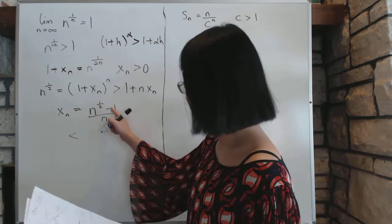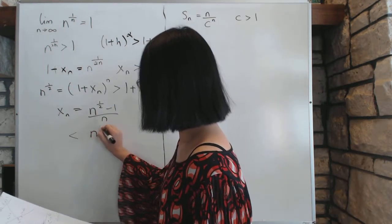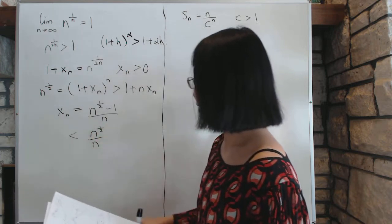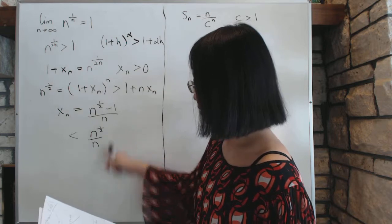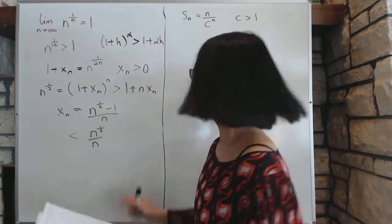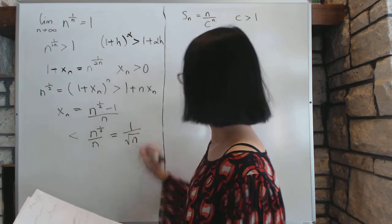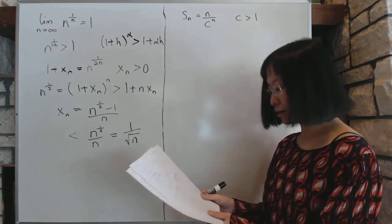This minus that. So n to the power 1 minus 1 divided by n. And then we, this value is less than just n one half over n. That is, we forget the negative 1. If you forget the negative 1, that value is even bigger. So this value is, of course, 1 over square root of n.